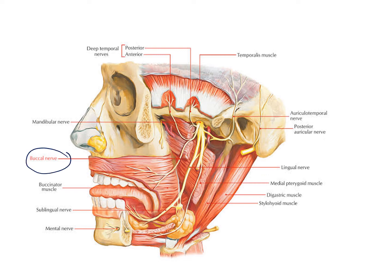The other structure that pierces the buccinator muscle is the buccal nerve, which is a branch of the mandibular nerve. So there are two structures piercing the buccinator muscle: the parotid duct from the parotid gland, and the buccal branch of the mandibular nerve.